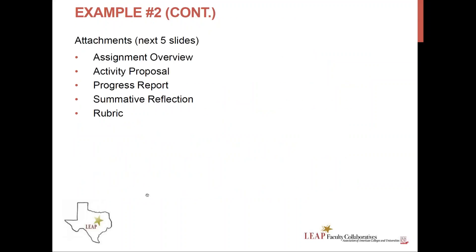These reports and reflections give students an opportunity to practice their writing while demonstrating what they've learned — in our case, an integration of social development along with motor or physical development. The next five slides outline my assignment. The first slide is an overview communicated to students at the beginning of the course. This is an online course, and the assignment is posted in Blackboard. Early in the semester, they create a proposal; about halfway through, they submit a progress report; and towards the end, a reflection. Last, there is the rubric I use for this assignment.